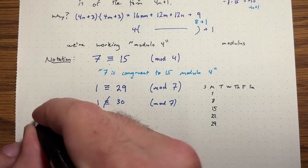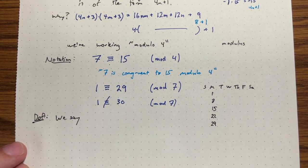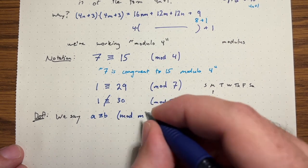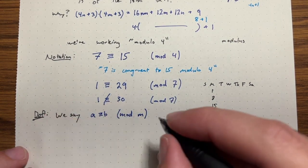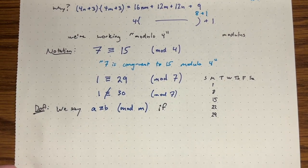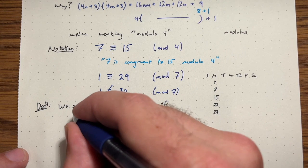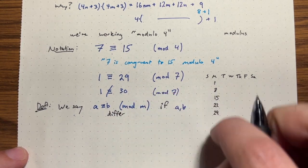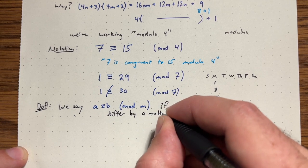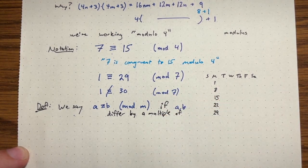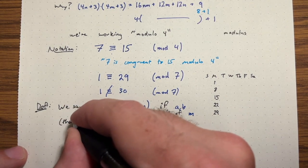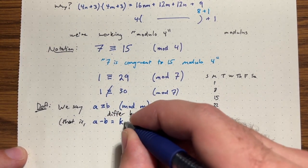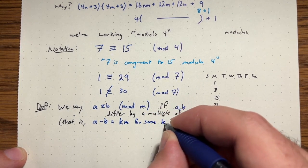In general, here's a formal definition. We say A is congruent to B modulo M — where M is our measuring stick — if A and B differ by a multiple of M; that is, A minus B equals K times M for some integer K.